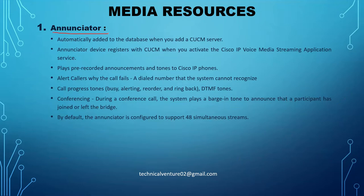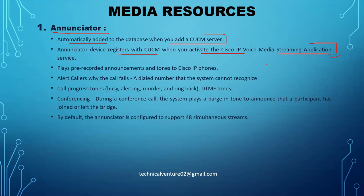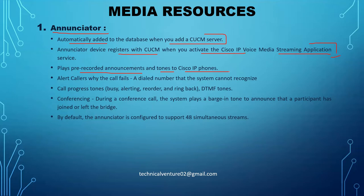The annunciator is automatically added to the database when you add a CUCM server, and it will register with CUCM as soon as you activate the Cisco IP VMS — that is the Cisco IP voice media streaming application service. You can activate this service on your publisher or subscribers. It plays pre-recorded announcements and tones to Cisco IP phones. If a call is not going through, it will give you an announcement alerting the caller why the call failed — for example, a dialed number that the system cannot recognize.